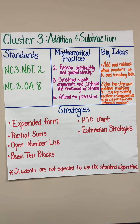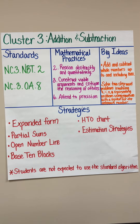Students will understand that the base-10 structure of our number system is useful when adding and subtracting numbers. They utilize and understand the place value of 3-digit numbers and work with numbers up to and including 1000. Students will understand the relationship between addition and subtraction and how that relationship can be used to solve 1- and 2-step problems. Students will also practice, refine, and develop efficient strategies to add and subtract and solve different types of story problems.